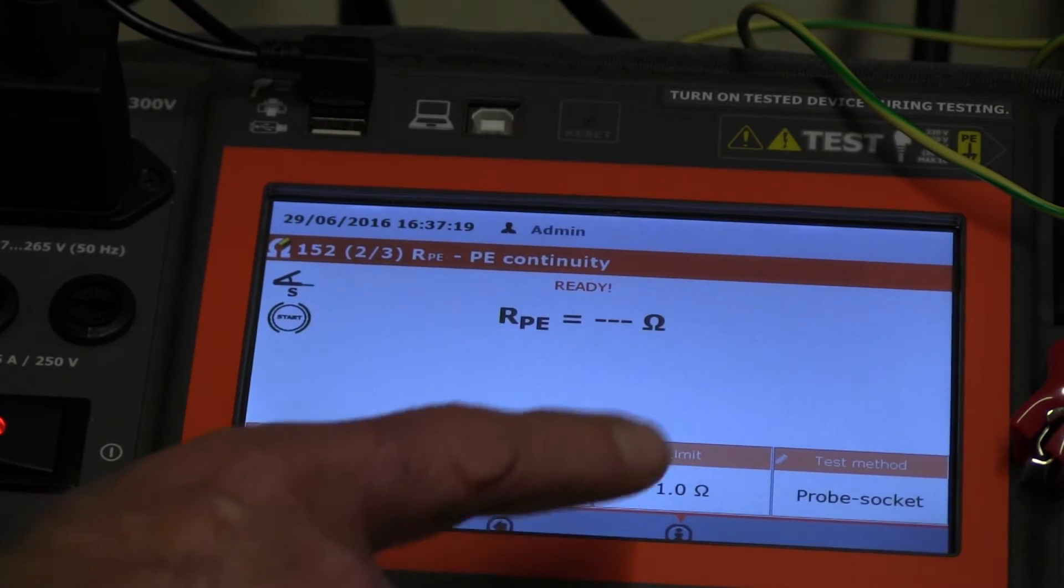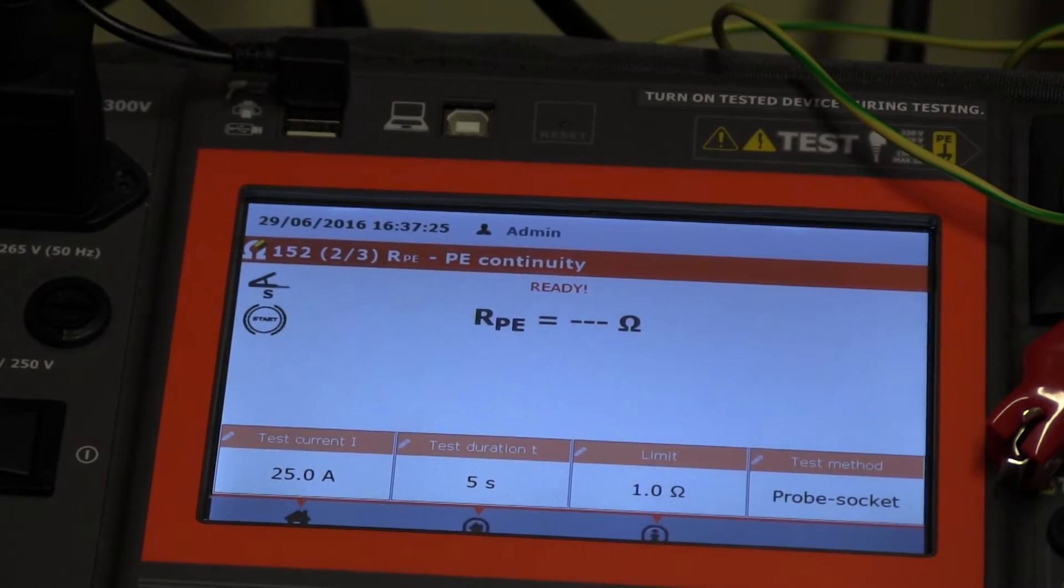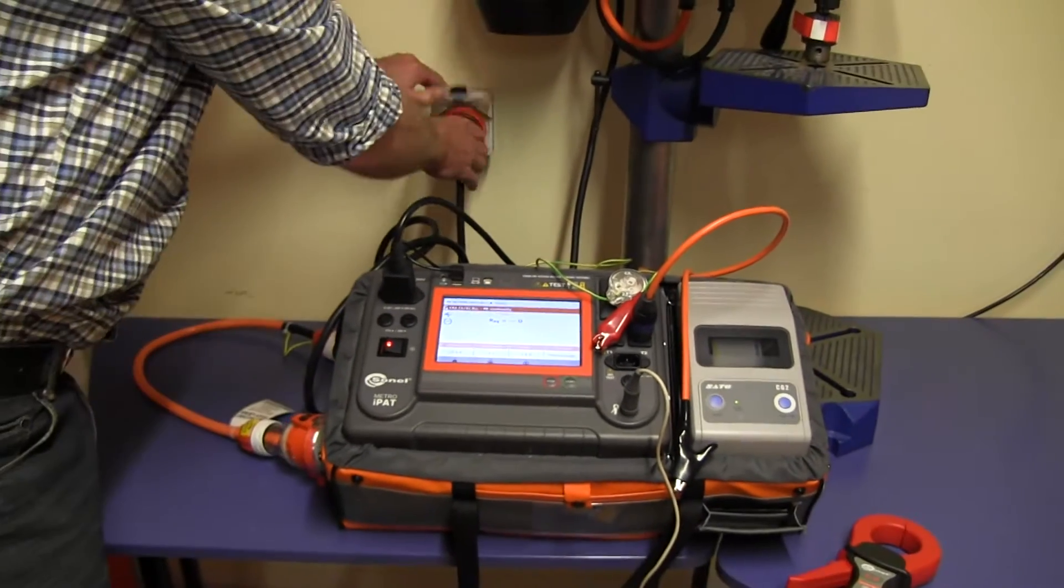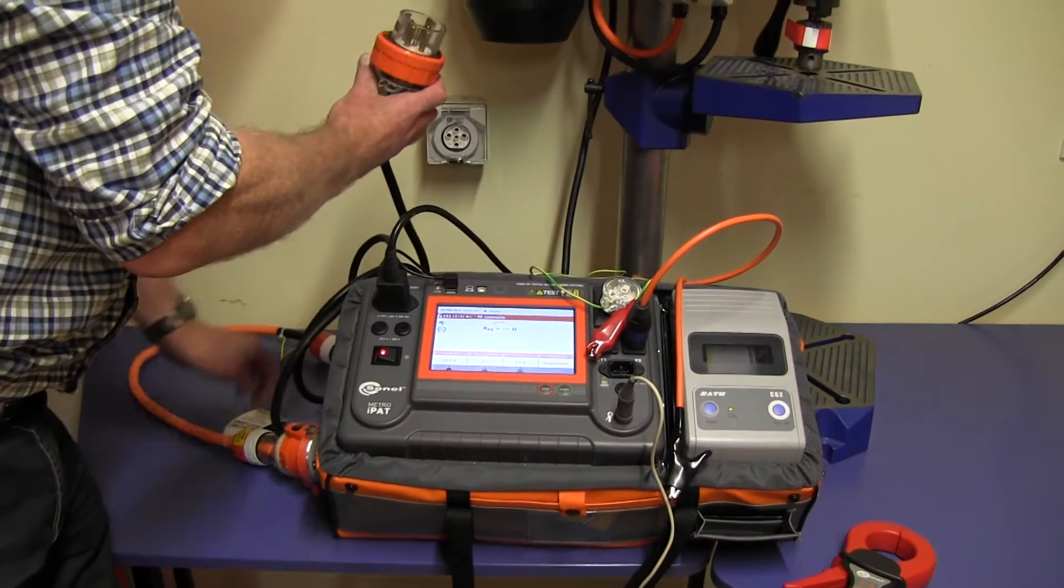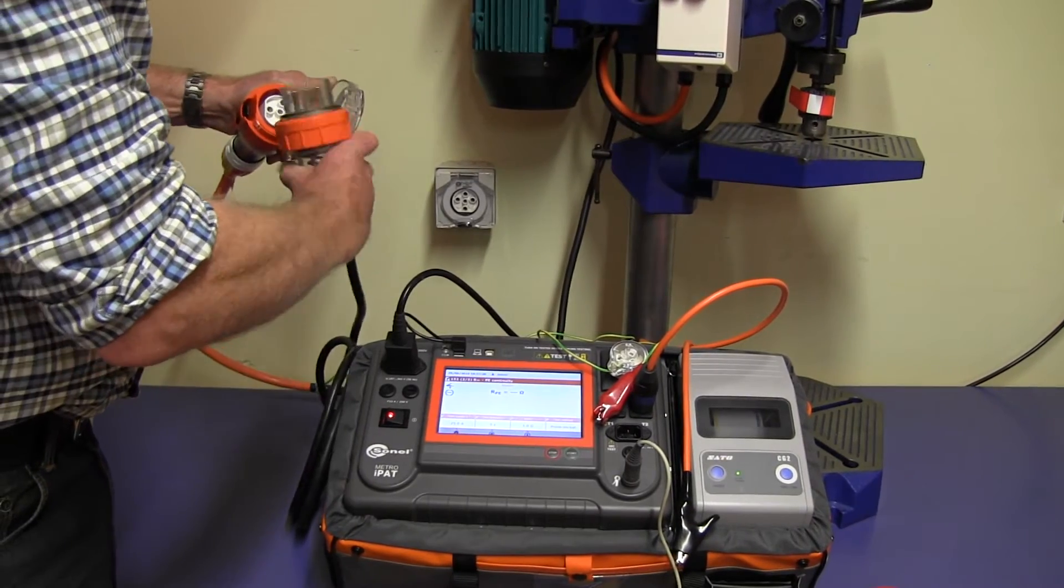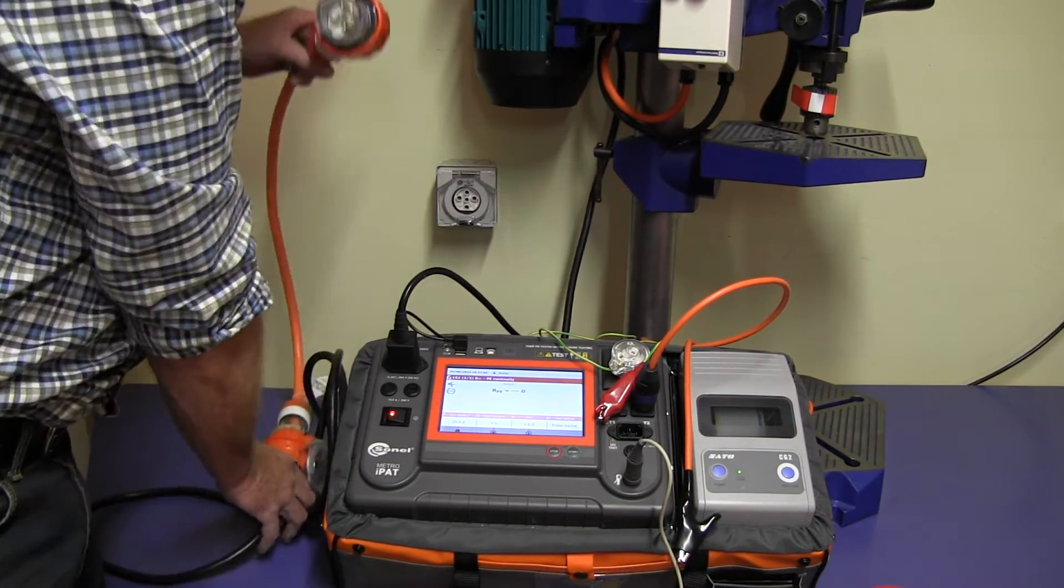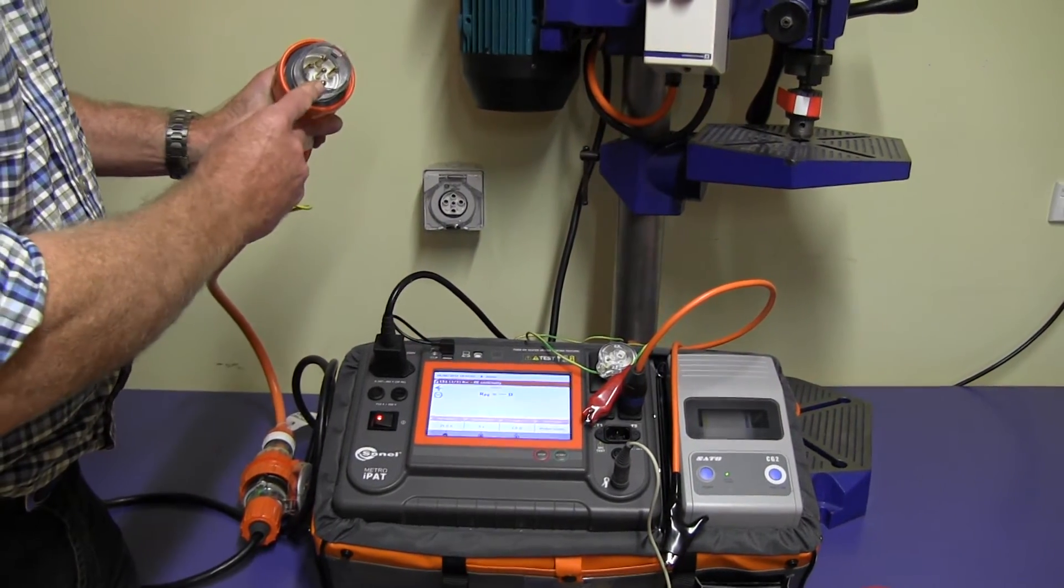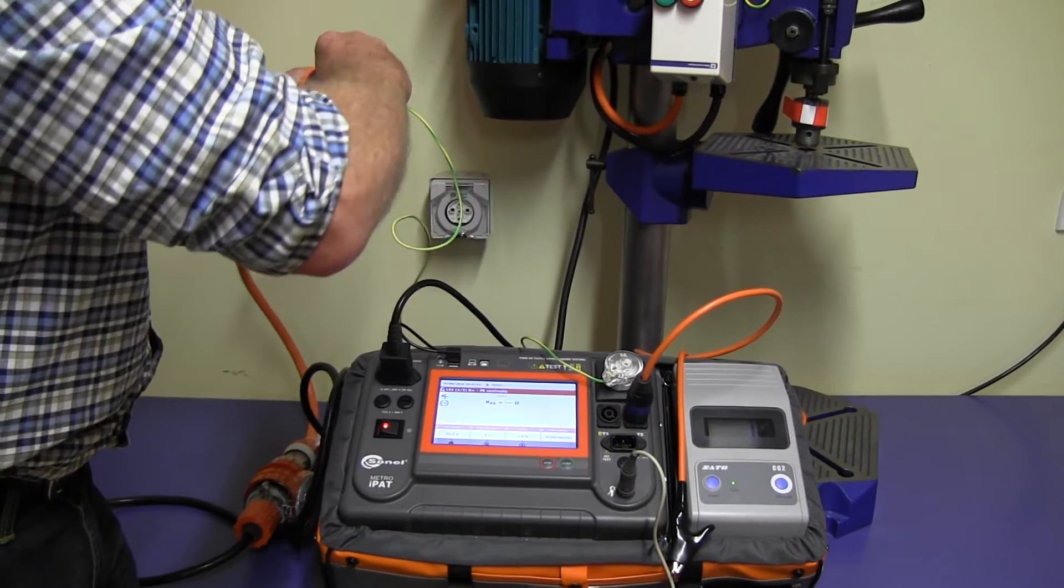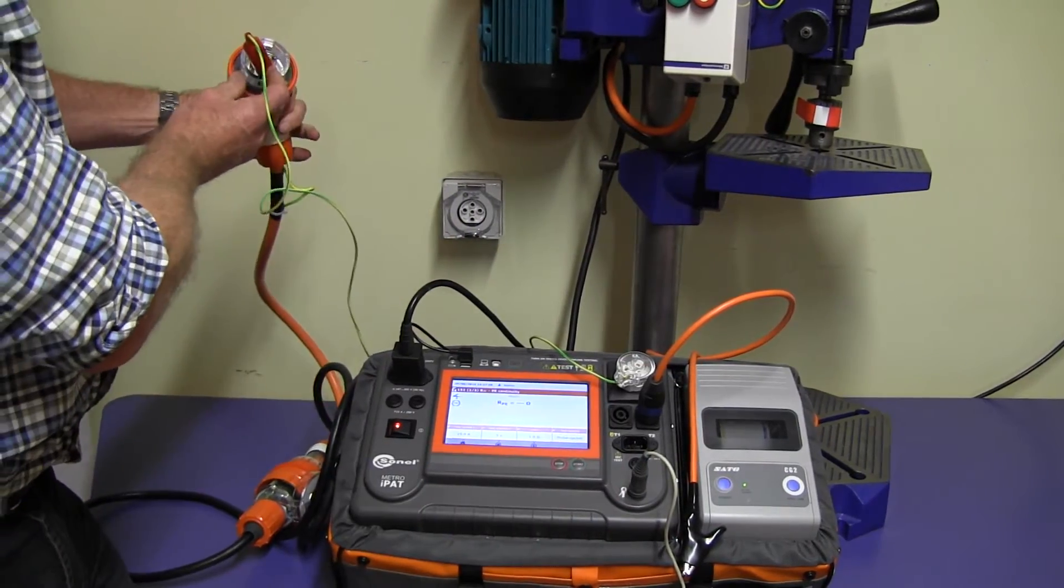The next test is protective earth. At this point we'll add the adapter lead. We need to disconnect the power to the drill press and plug the adapter lead in. Now we're going to measure the earth resistance by putting this on the earth pin here.